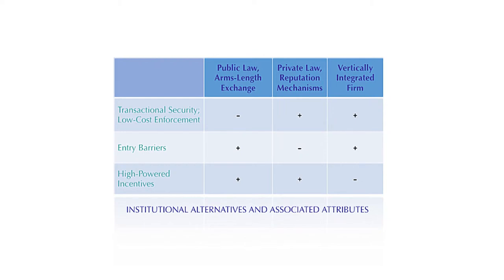Specifically, private law and reputation mechanisms exhibit the benefits of transactional security and low-cost enforcement, like vertically integrated firms, and the benefits of high-powered incentives, like public law and markets, but also impose the single cost of entry barriers that neither of the other two exhibit. The resulting model, then, depending on the needs of the underlying transaction, can predict which one mechanism will excel above the others.